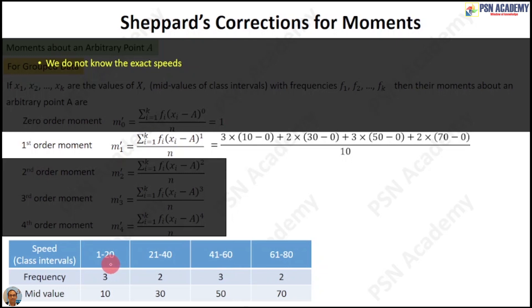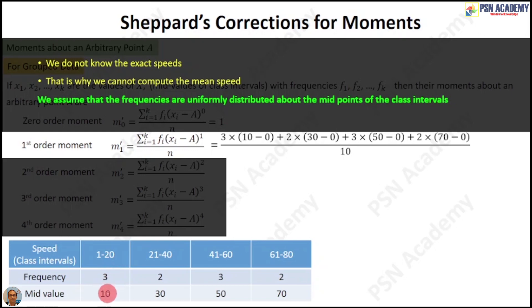Because of this inadequate data, we cannot compute the real mean speed of the car. We have no other way but to assume that the speed was 10 kmph for 3 times, and this 10 is the midpoint of the first class interval between 1 and 20. This is our assumption that frequencies are uniformly distributed about the midpoints of the class intervals. Based on this assumption, we get the moment as 38.